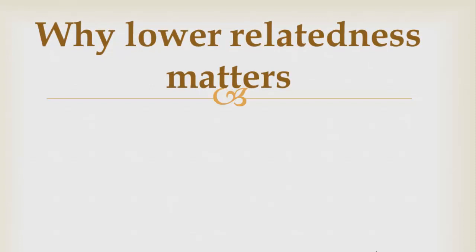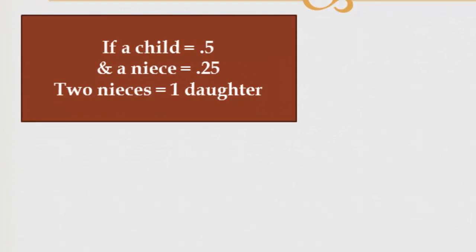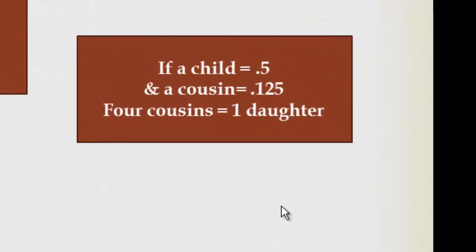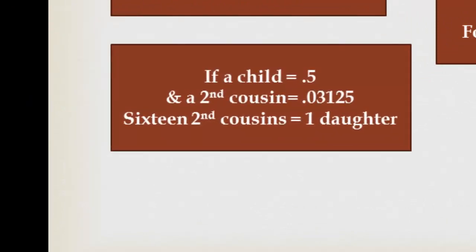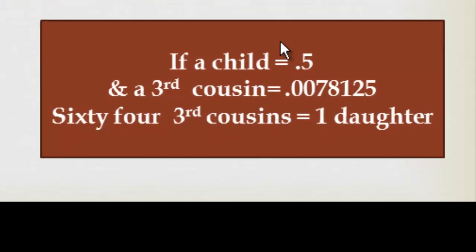Lower relatedness matters when we go back to our explanation of Hamilton's Rule. A child has a 50% chance of sharing a gene identical by descent, and a niece a 25% chance, meaning two nieces are equivalent to one daughter. Comparing a child to a cousin, we need four cousins to equal one daughter. For a second cousin, we need 16; for a third cousin, 64. It's very unlikely we can invest in 64 third cousins to make up for not having one offspring ourselves.